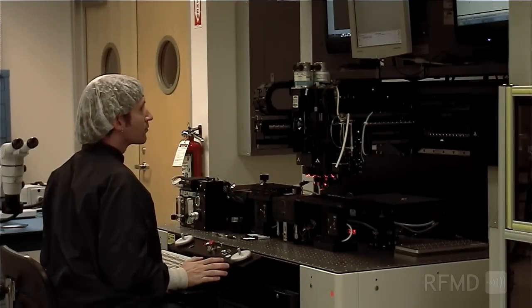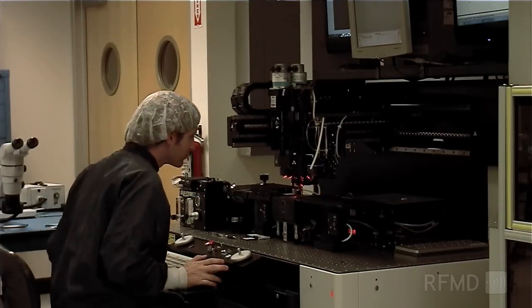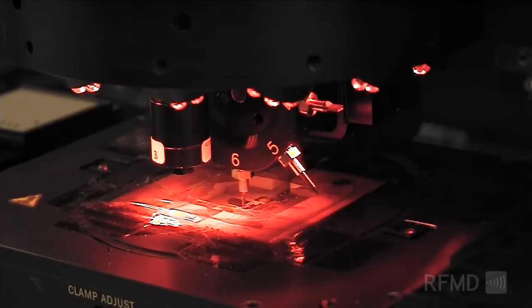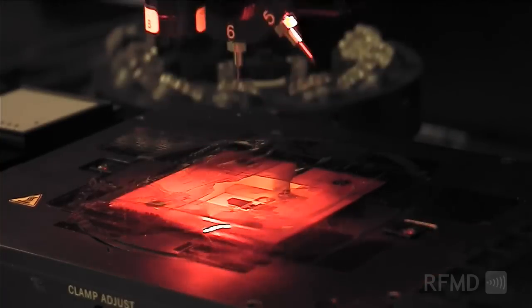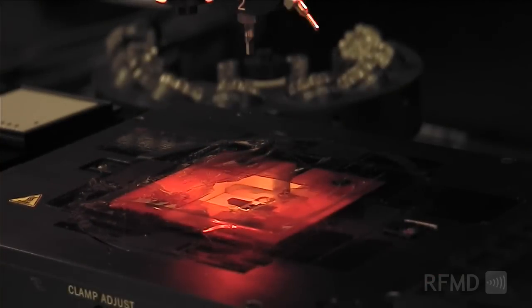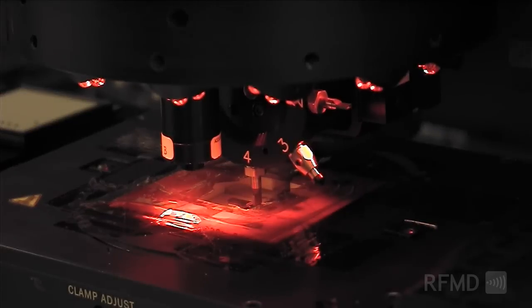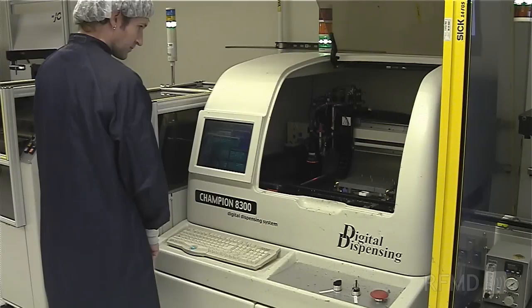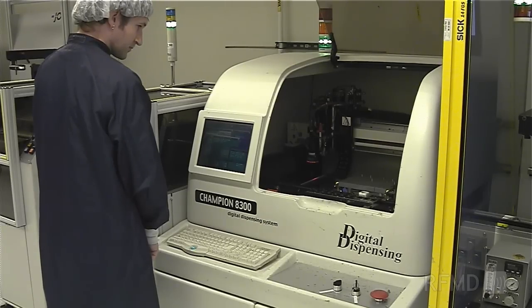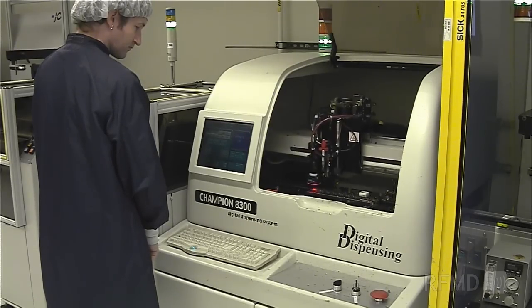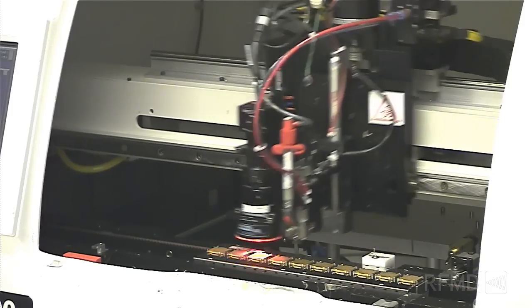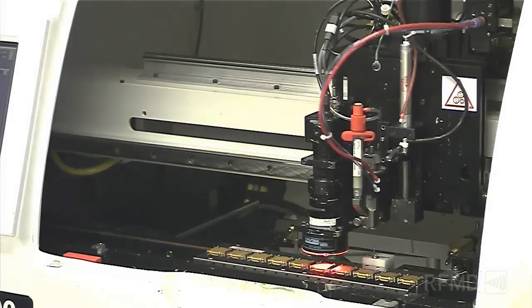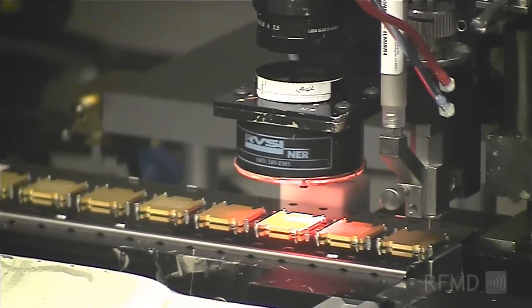After passing through inspection, wafers move to the die-attached phase of production. Technicians program assembly configurations into the die-attached machine, and once programmed, batches from prototype to volume levels are processed. The die are attached to carriers or packages using epoxy or eutectic attach methods. Multiple placements of various substrate materials can be engineered to provide an optimal solution for the die-attached process.